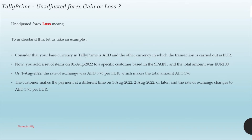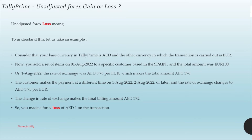When the customer makes the payment, the rate of exchange has changed to 3.75, which is less than the invoice rate. So the total final amount received is AED 375 instead of AED 376. So we have made a forex loss of 1 for this particular transaction. This is what is called unadjusted forex gain or loss in Tally Prime or in a normal scenario.